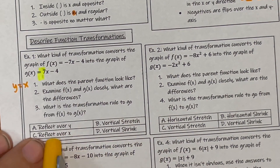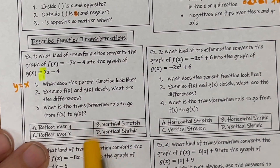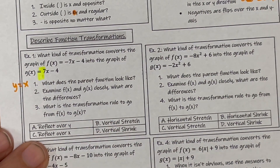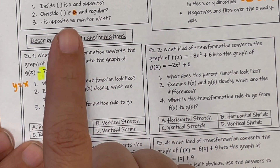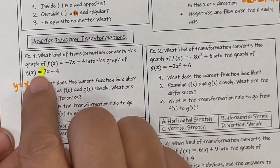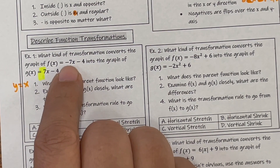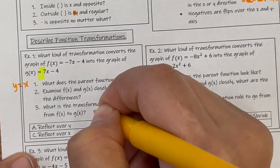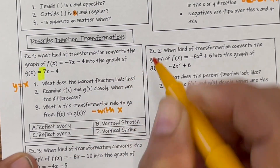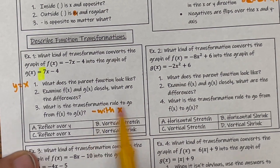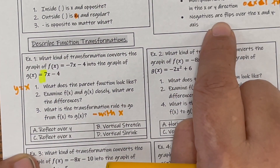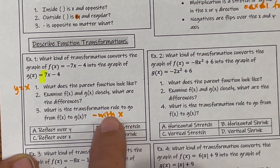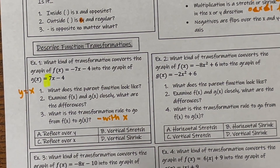Sometimes you have to look at your options because several transformations could work. To change this negative to a positive, it's going to have to be a reflection because I need a negative. I need a negative attached to the X in order for just the X to change. So a negative with X means it's inside, and if it's inside and you have a negative, it's going to be a flip over the opposite — so a flip over the Y.